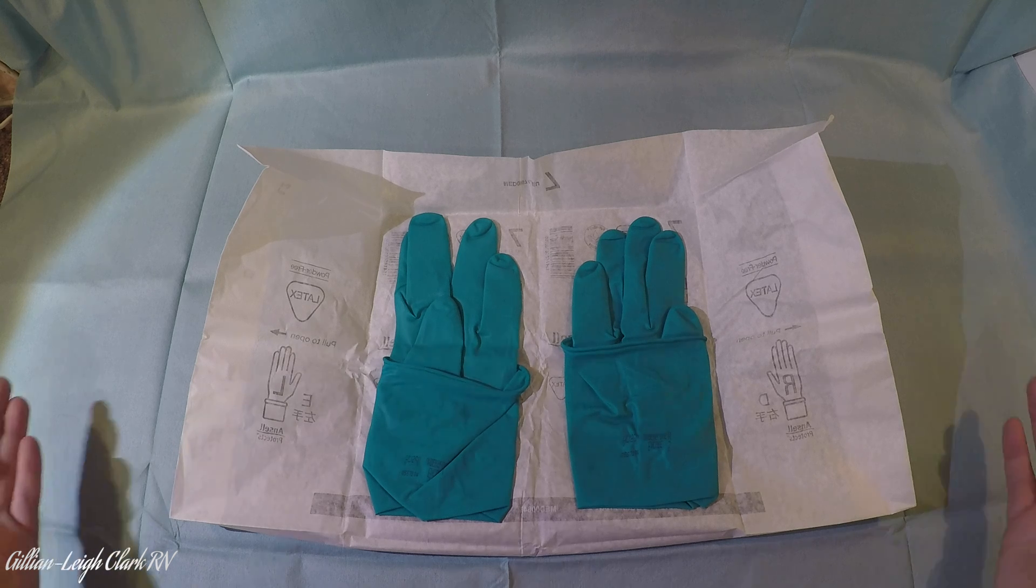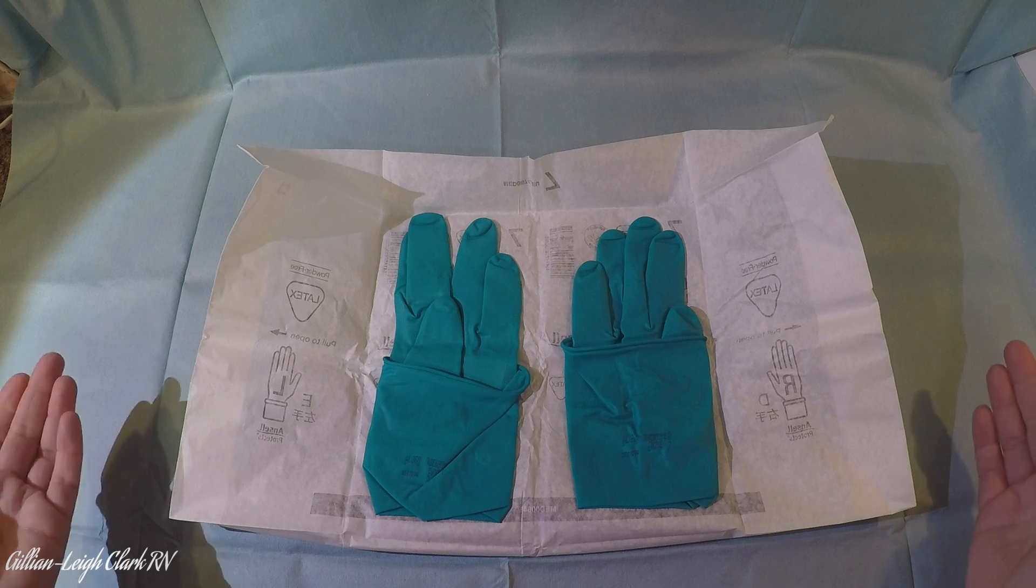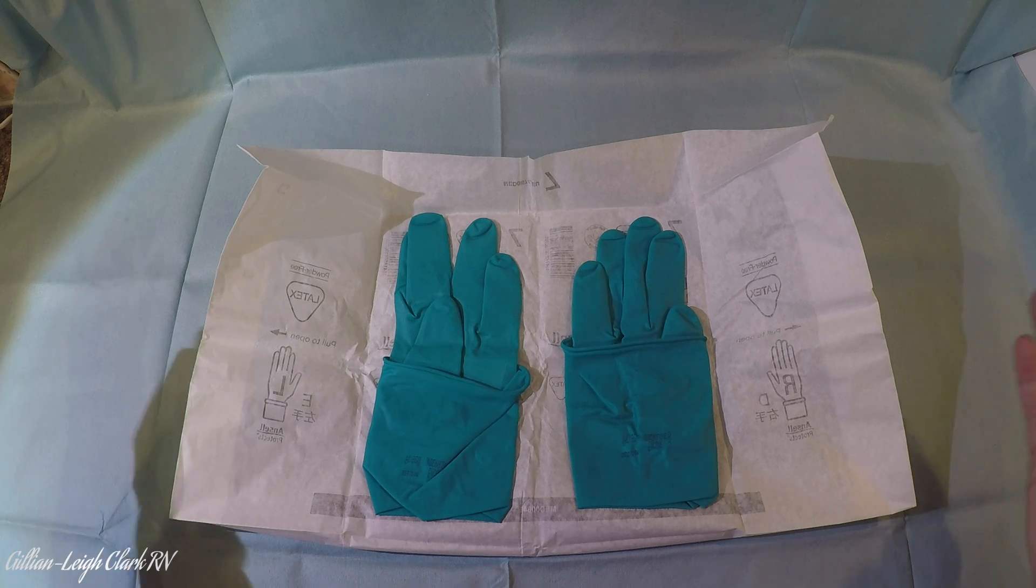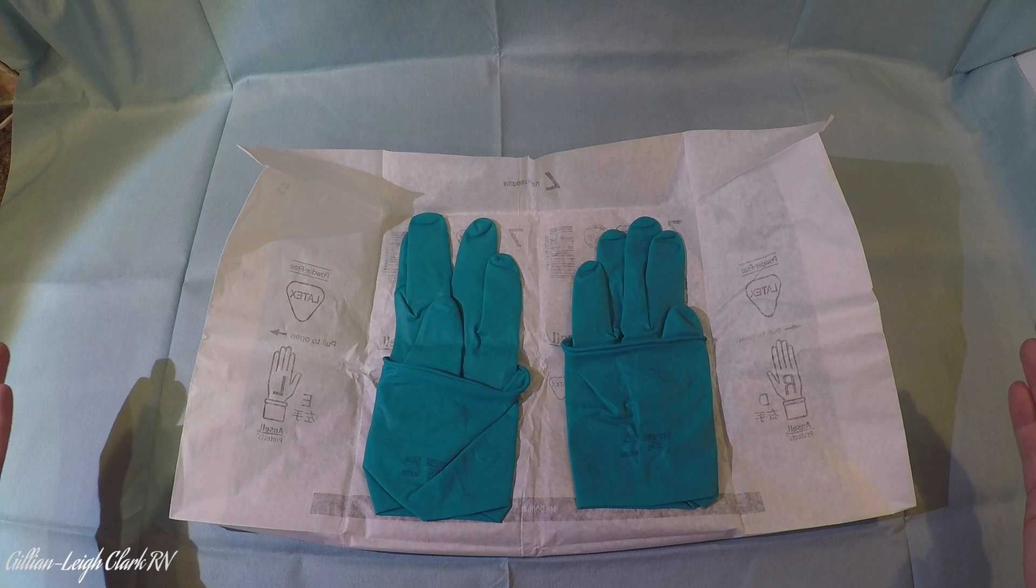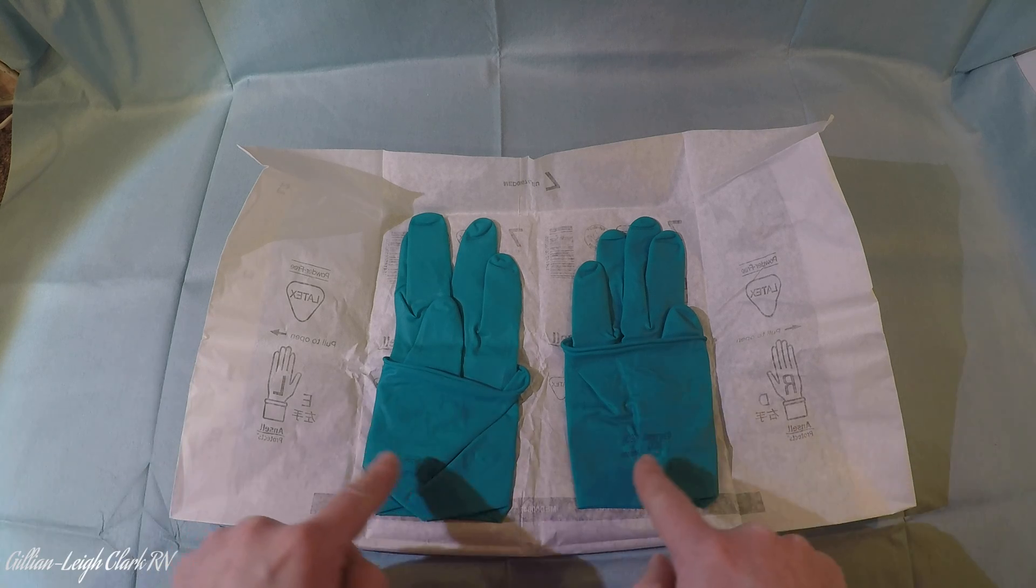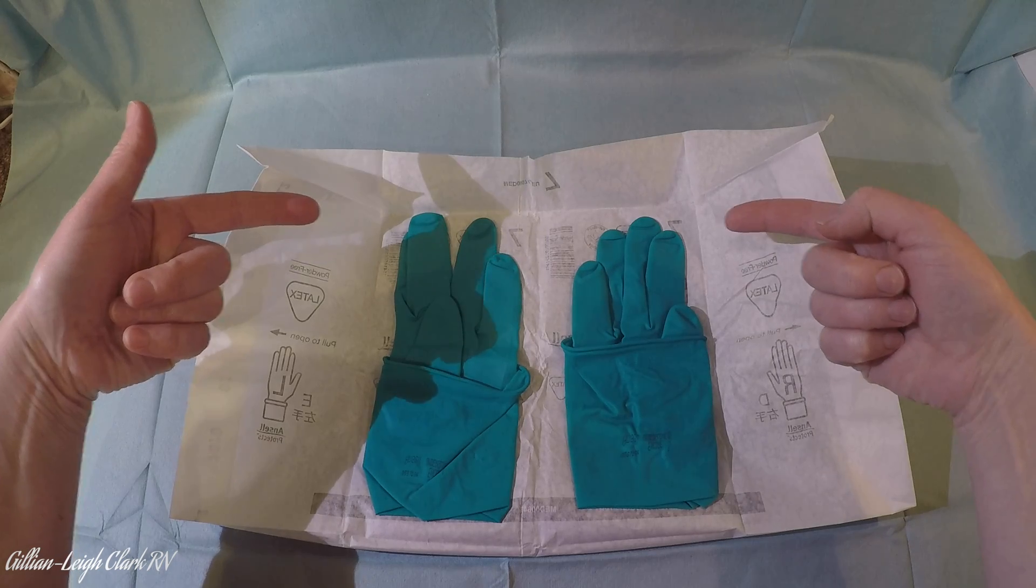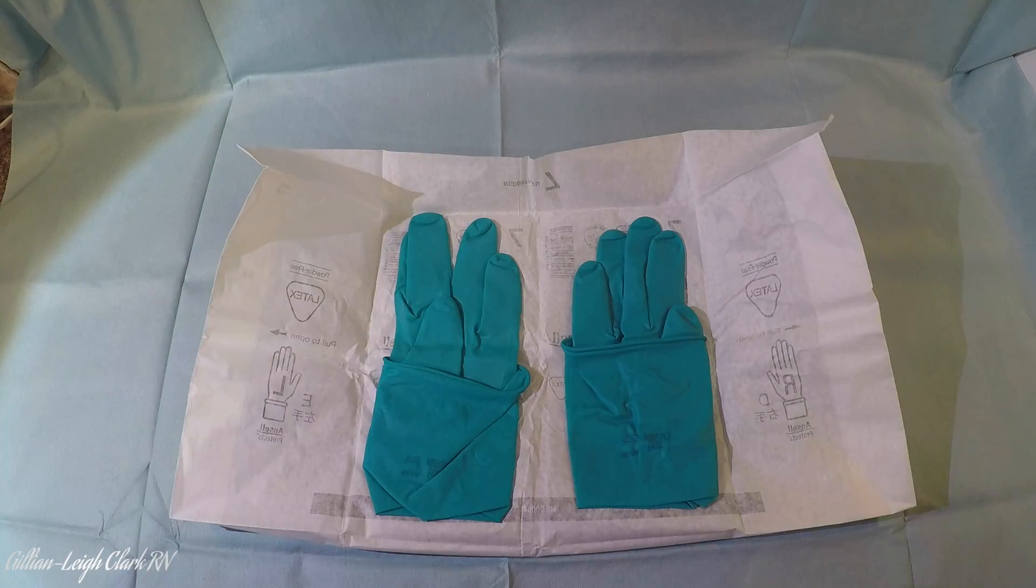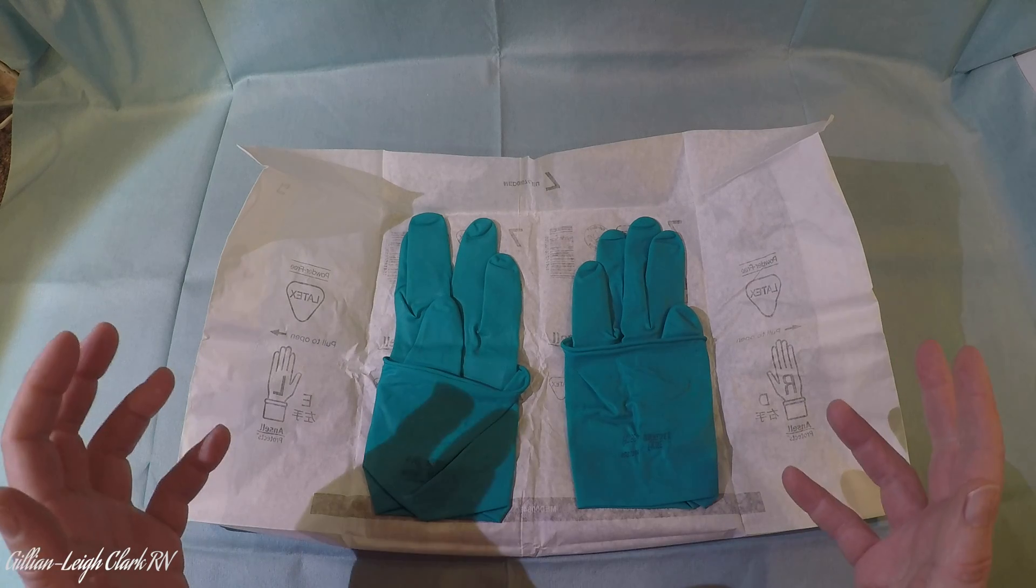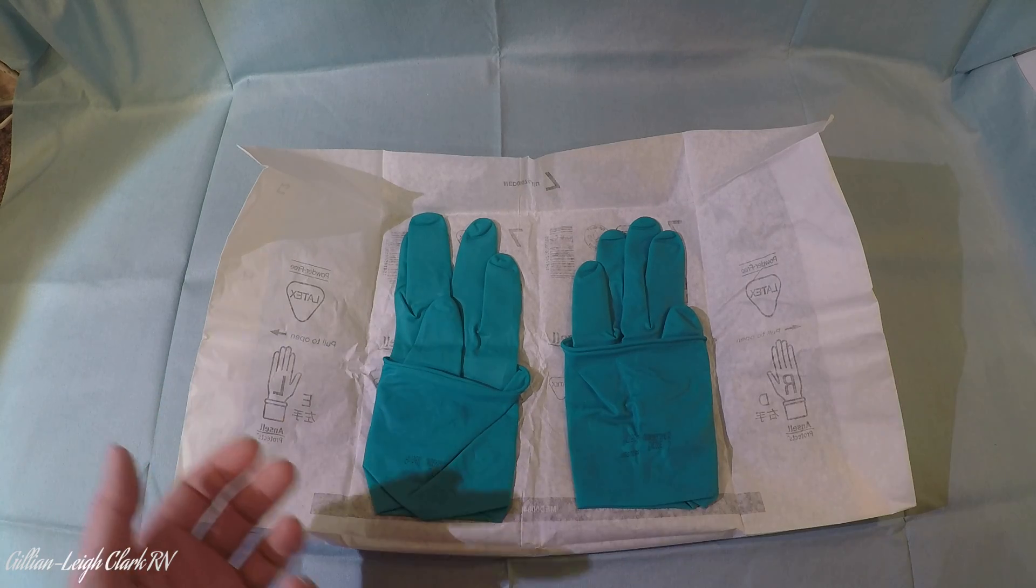Now these sterile gloves need to go into my clean hands and what I want to not do is touch the sterile part of the outside of the glove. So if you look here this is inside of the glove, the cuff that's folded up and these are the sterile outsides. So I want to stay away from this part of the sterile field with my clean hands so that I can have a sterile field with which to work if I need to drop anything onto it.